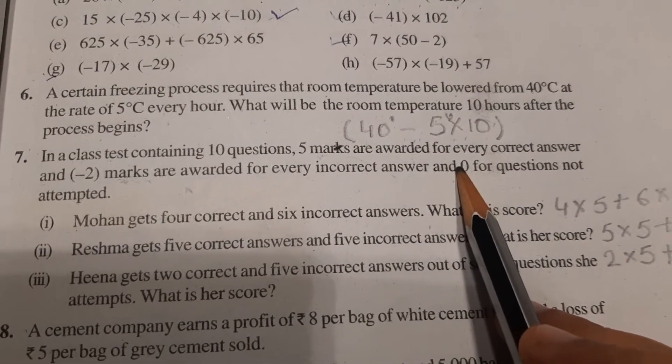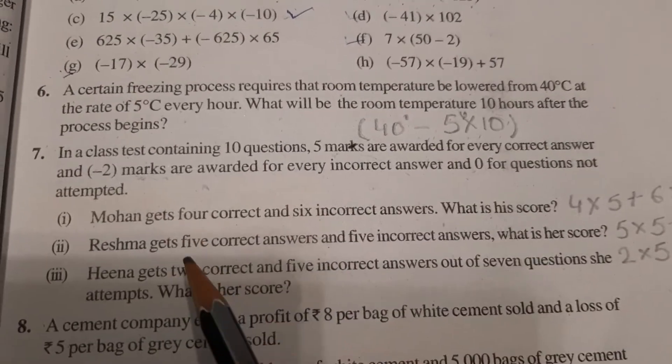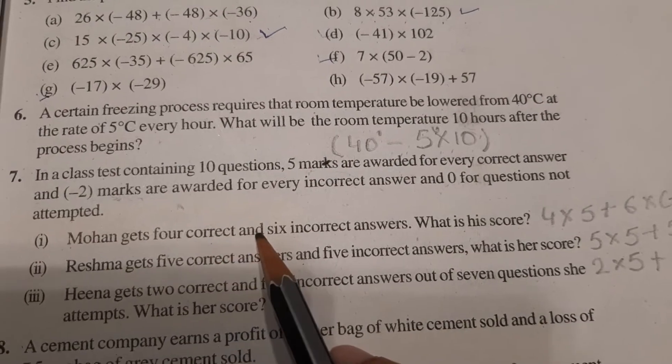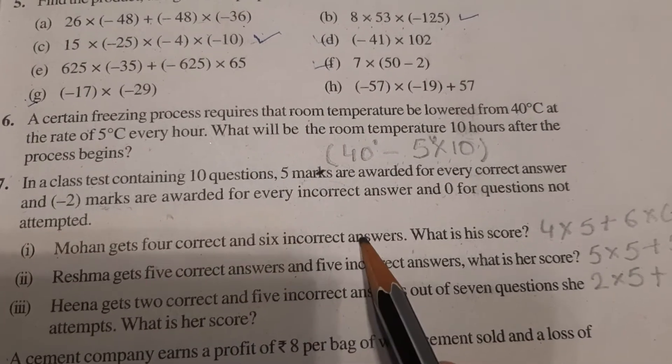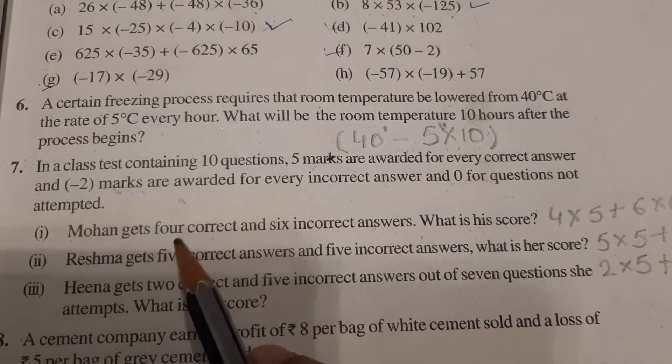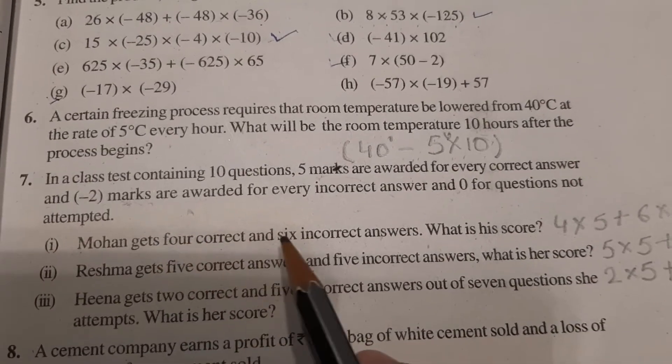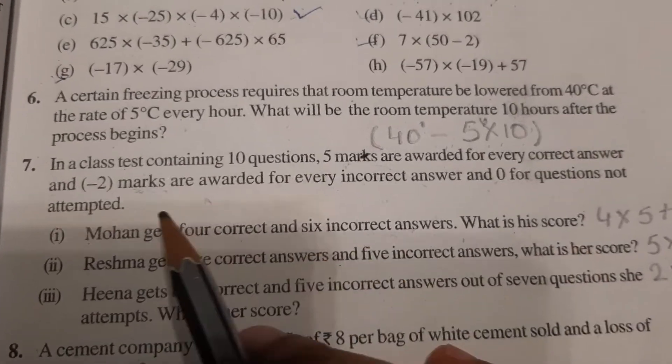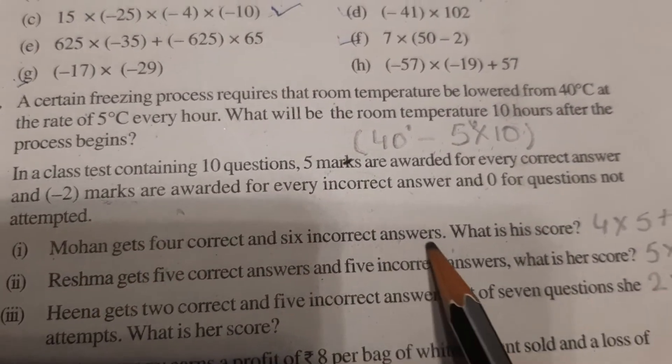This is the condition. Now we have to find the marks for different students. Three students are given here. First, Mohan. Mohan gets 4 correct and 6 incorrect answers. Total 10 are there, 4 correct and 6 incorrect answers. What is his score?